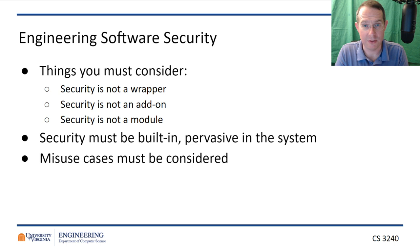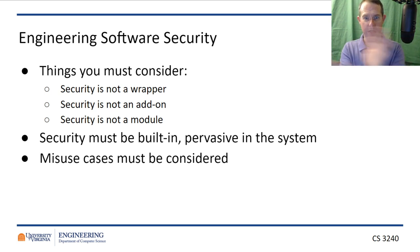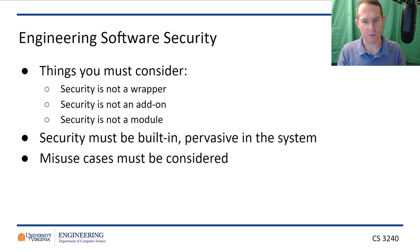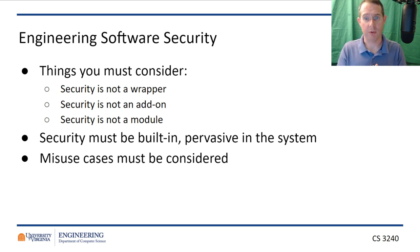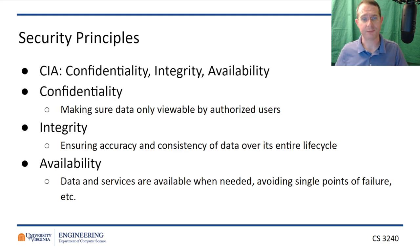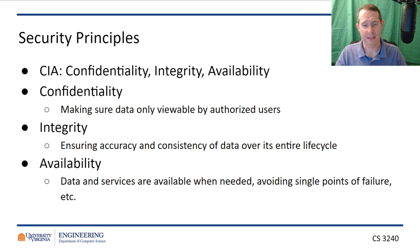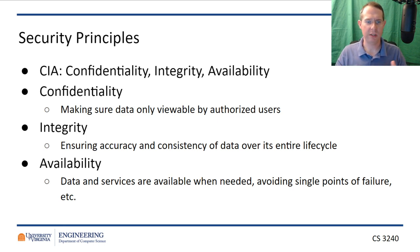Let's think about things you need to consider as a software engineer. First and foremost, security is not a wrapper — it is not something where you build a piece of software and then say I will now add the security force field around it. It has to be baked in from the beginning, addressed throughout the entire software life cycle. It's not an add-on, it's not a module. You have to think about what your users could do — intentionally or unintentionally. Remember: your users hate you, they are going to do whatever they can intentionally or unintentionally to try and break your software. That brings us to the core security principles: traditionally called the CIA principles — confidentiality, integrity, and availability.